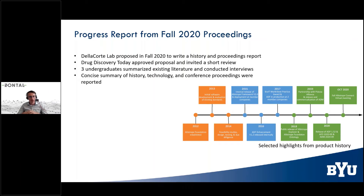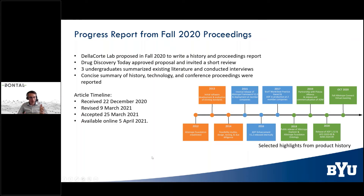We had three undergrads who learned a lot more about this format than they were expecting when they signed up for the project, but they really enjoyed it — they learned something they would not have learned in a normal classroom setting. The result was that we finished a manuscript a few months after Allotrope Connect, submitted it right before Christmas, and by March had it once through the review process. We were able to revise and resubmit, and by end of March it was accepted. Beginning of April, the first preprint was published by Drug Discovery Today, and last week they updated it with the open access proofed version.